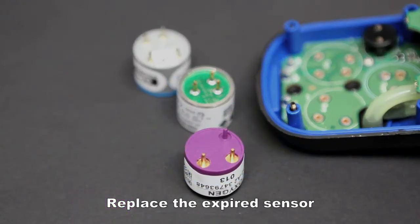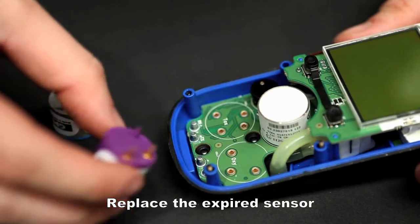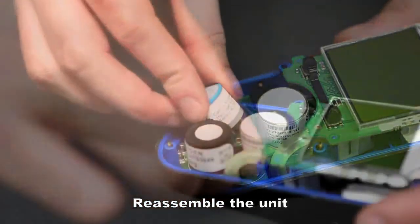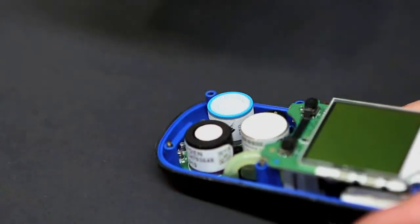The pins are arranged differently on each sensor, so you cannot install the wrong sensor or install a sensor incorrectly. Then reassemble the unit.